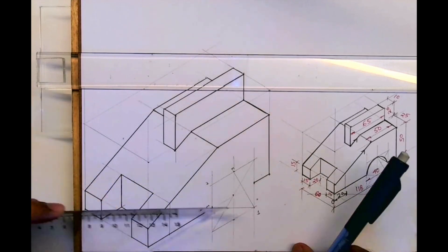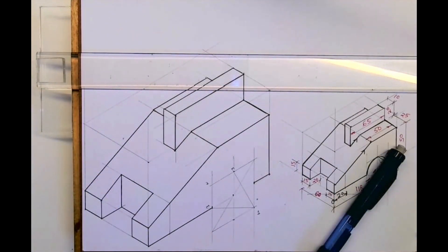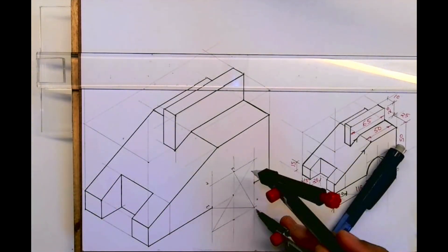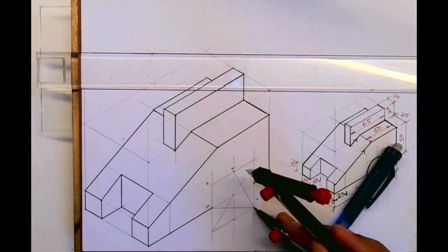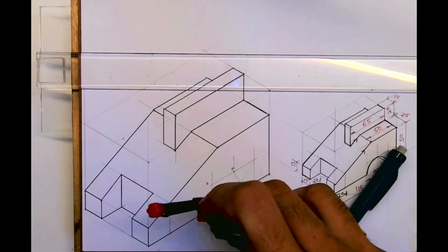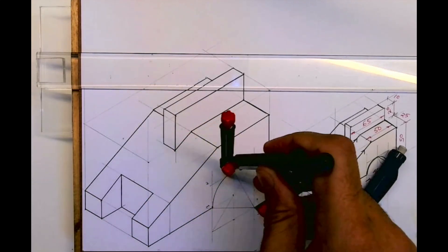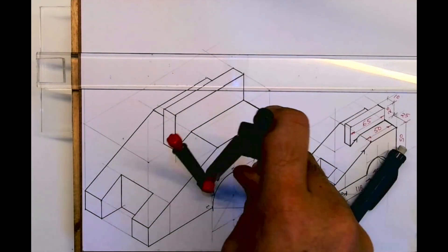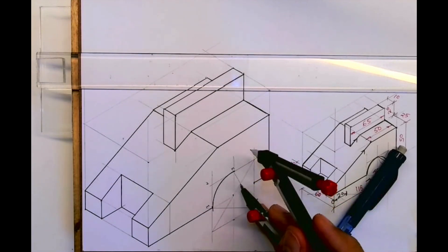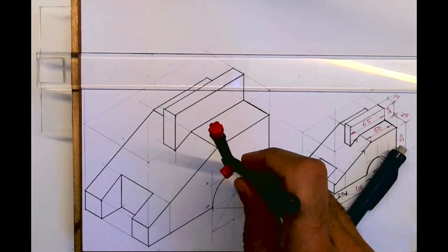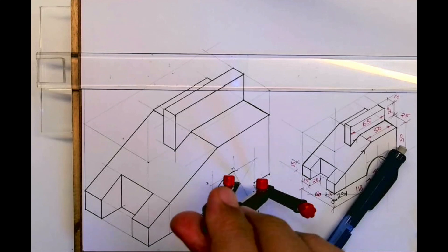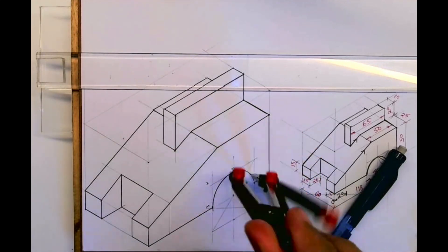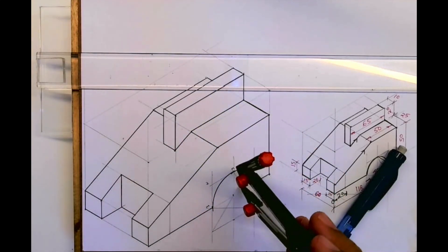So with a compass you take 1 to M, and you can draw an arc. Same way, wherever that longest diagonal and that 1 to M line is intersecting, from that point to M again you draw an arc like this. So you will get the required circle.